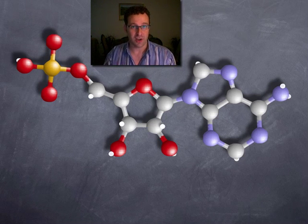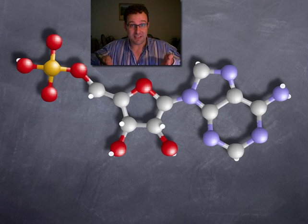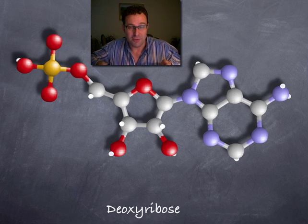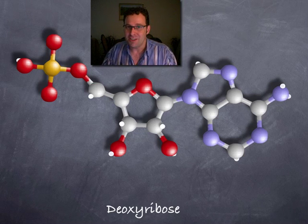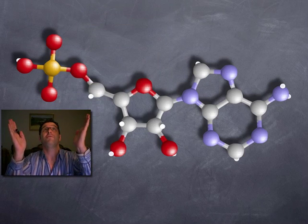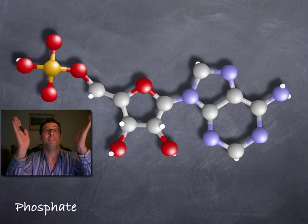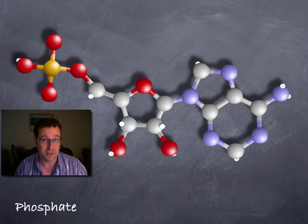There's three parts to every nucleotide. Firstly, you can see that there's this, most importantly, this 5 carbon sugar molecule, in this case deoxyribose. We'll come back to that in just a moment. There's also this phosphate molecule with the yellow phosphorus and the oxygen, which is red.